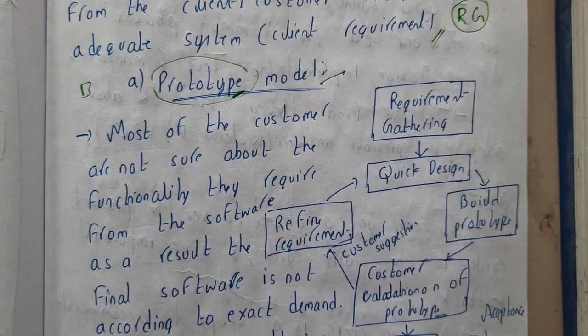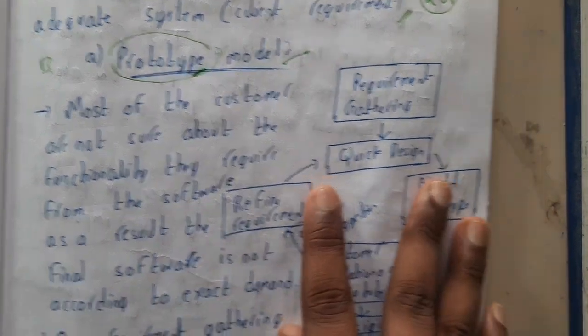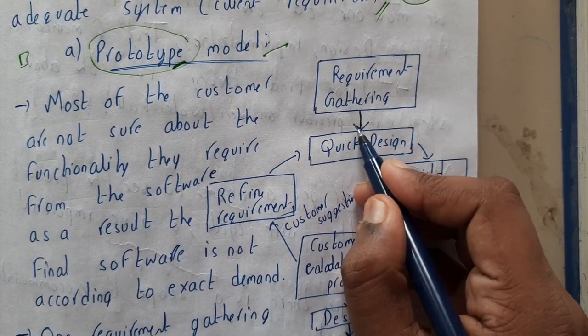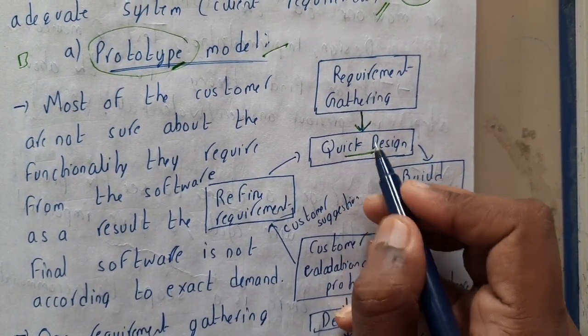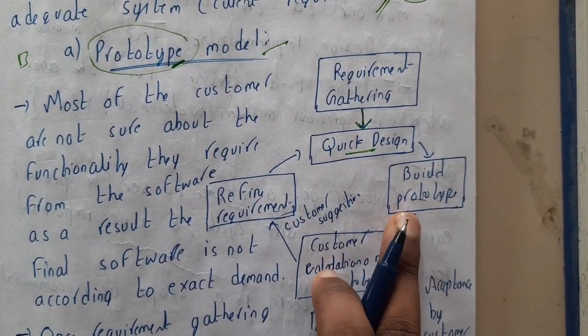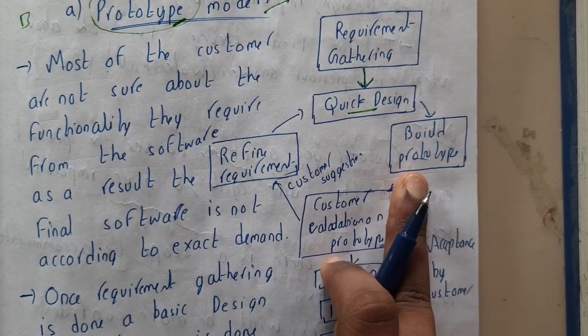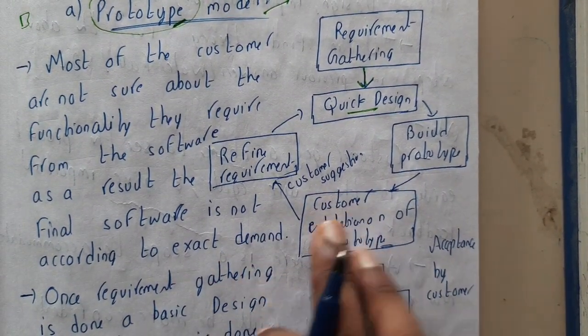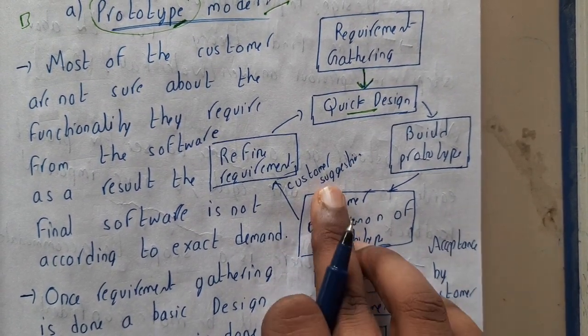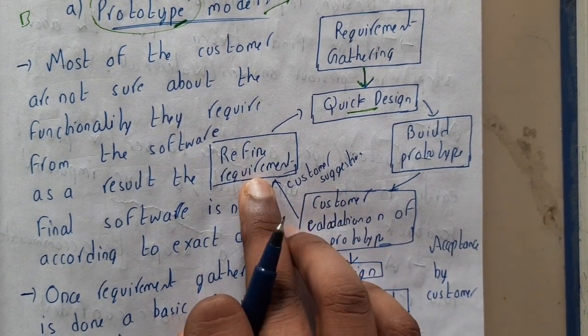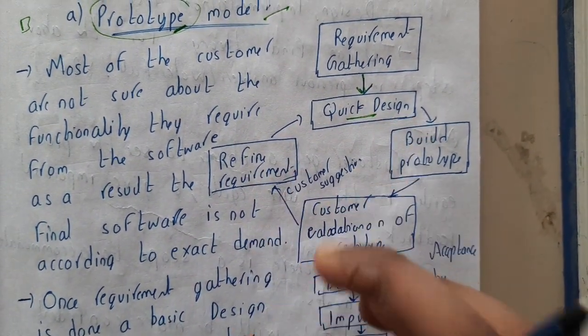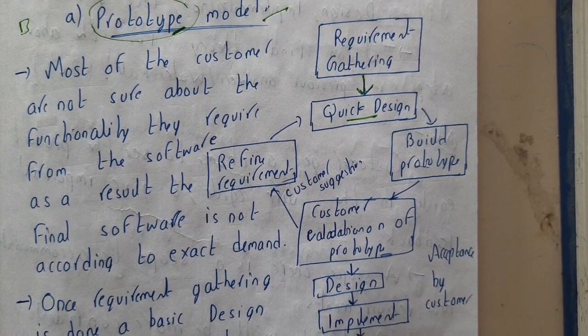The flow will be in this way. Initially you will be gathering the requirements. Once you gather the requirements you will be creating a quick design, just like for a prototype. Based on that design you will be building your prototype. Once the prototype is ready you will go to your customer and say hello client, this is the prototype of the project. He'll be giving you some suggestions. If there are any suggestions you will modify the requirements and again you do the quick design. This process continues until you get the particular requirements, until the requirements reach the client's expectations.